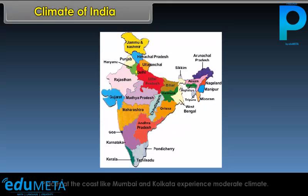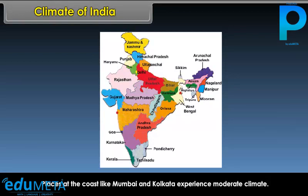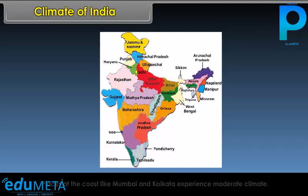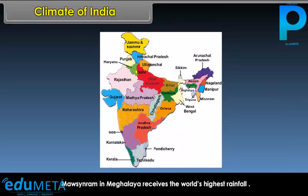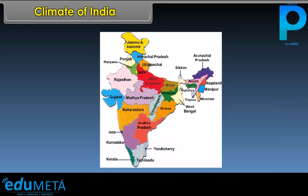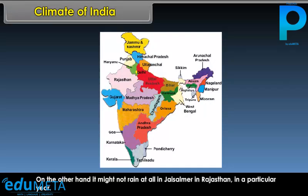Places at the coast like Mumbai and Kolkata experience moderate climate. Mawsynram in Meghalaya receives the world's highest rainfall. On the other hand, it might not rain at all in Jaisalmer in Rajasthan in a particular year.